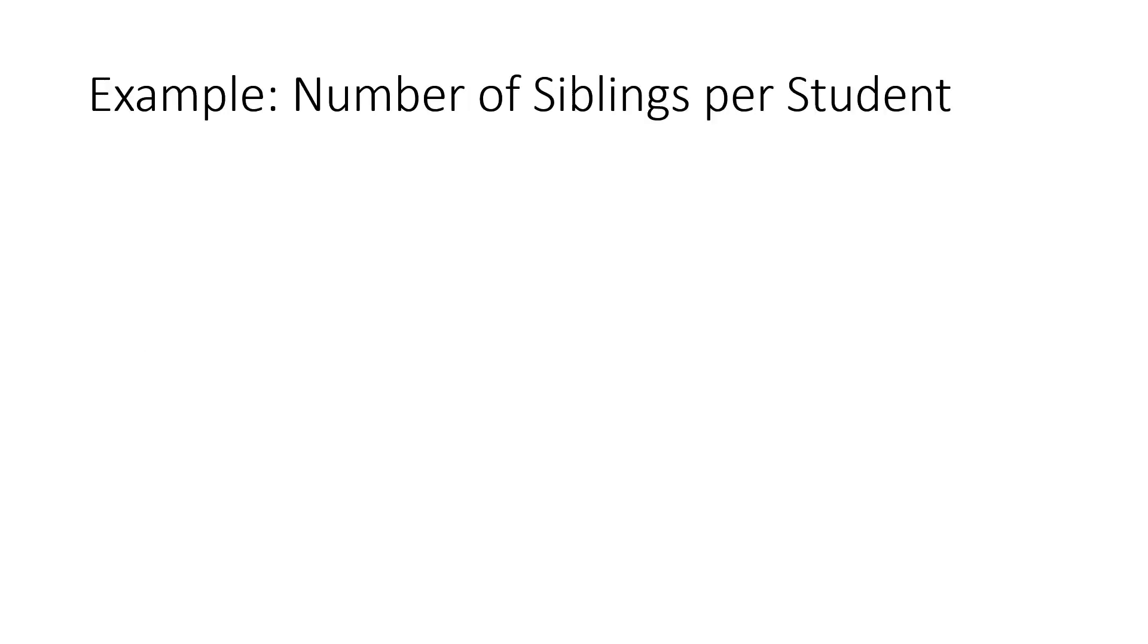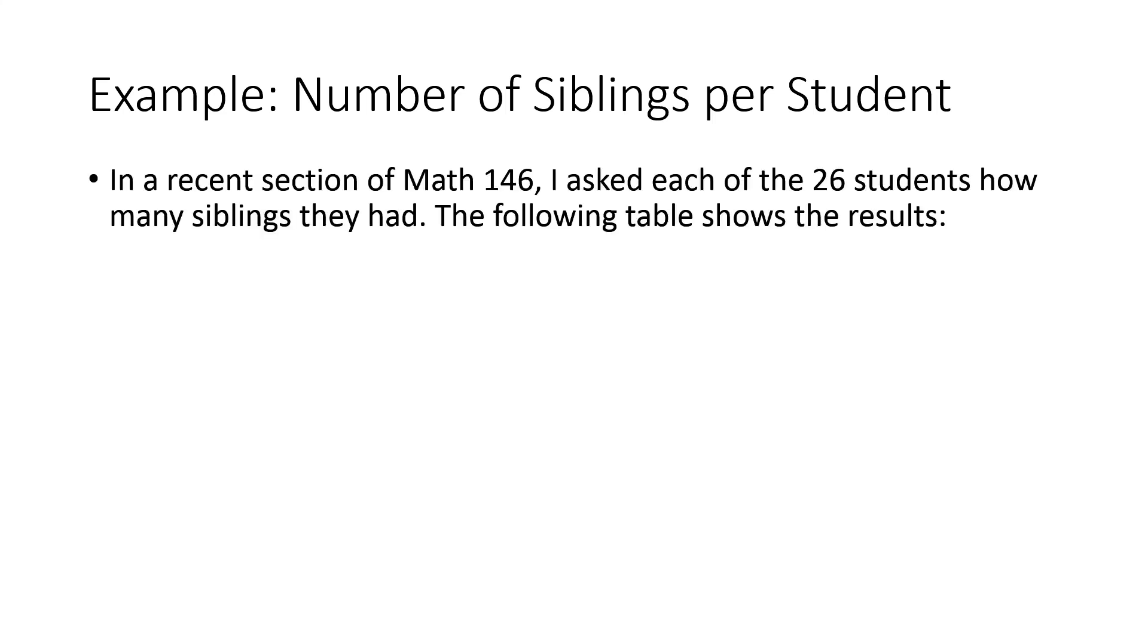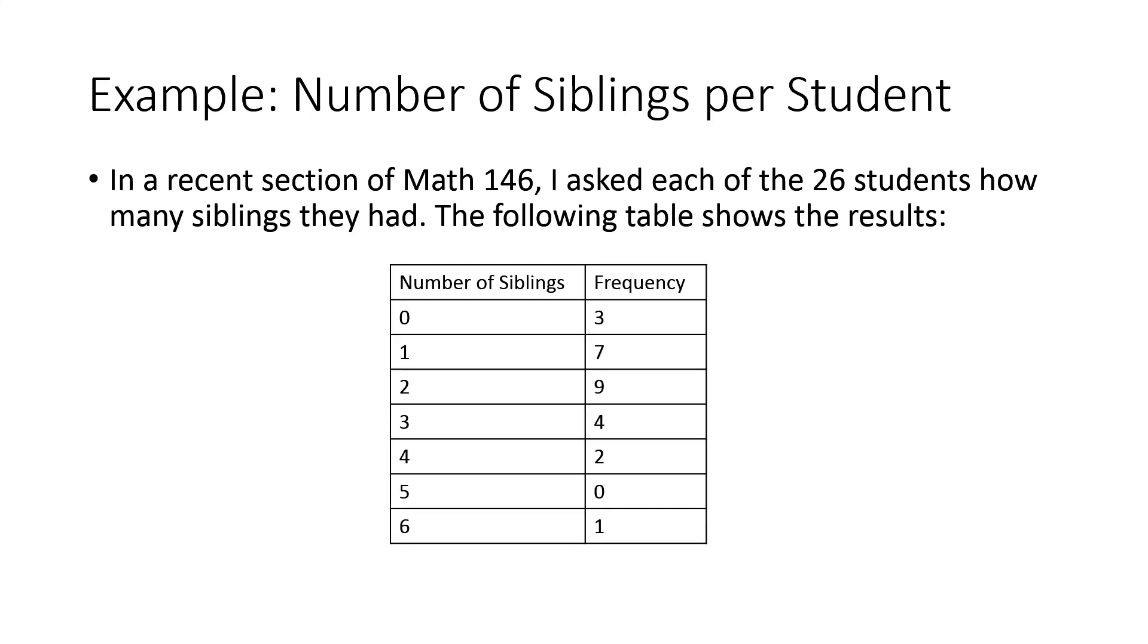One example I always like to do with my students is I like to observe how many siblings does everyone have, because a number of siblings is certainly a discrete variable. You certainly wouldn't claim like 1.75 siblings. In one of my sections of Math 146, which is probability and statistics, I asked each of my 26 students who were attending that day how many siblings they had, and I constructed a frequency table to outline those results.